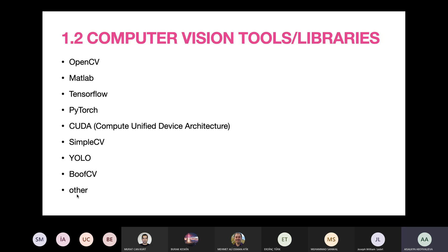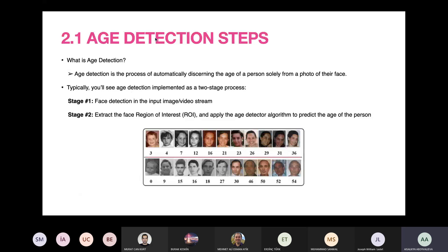Let's start with age detection theory. Age detection is the process of automatically discerning the age of a person solely from a photo of their face. Typically, age detection is implemented as a two-stage process: firstly, we detect the face in the input image or video stream; and secondly, we extract the face ROI and apply the age detection algorithm to predict the age of the person.